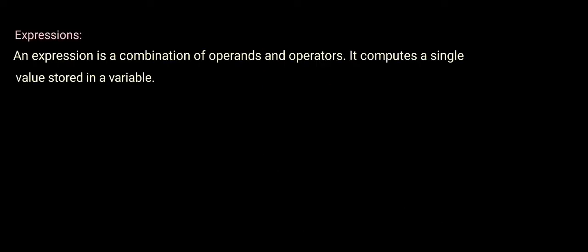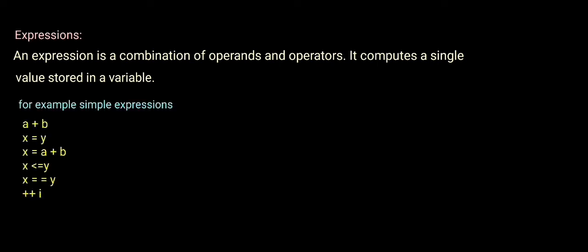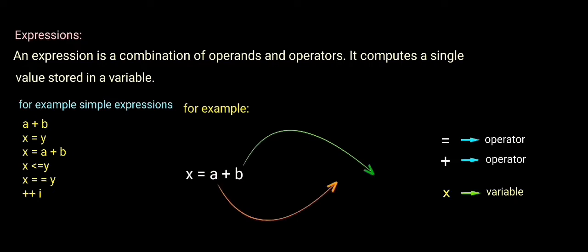What is an expression? An expression is a combination of operands and operators. Operands and operators together compute a single value stored in a variable. The operator and operands process produces a single value stored in a variable. For example, x is equal to a plus b. Here, a and b are the operands.